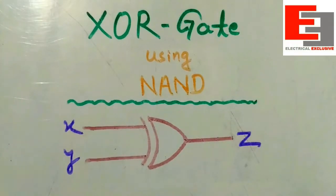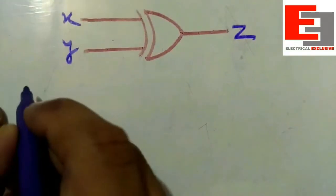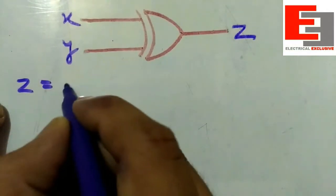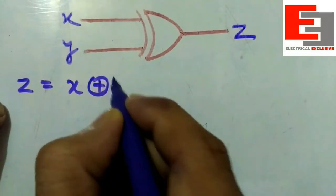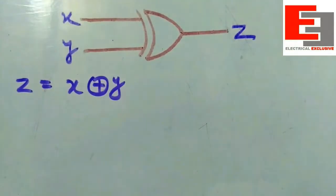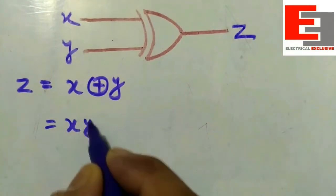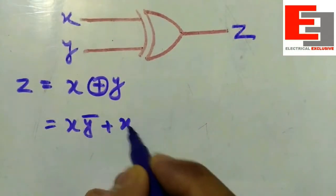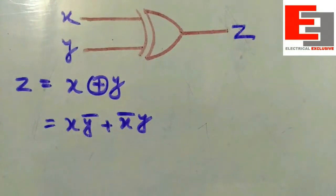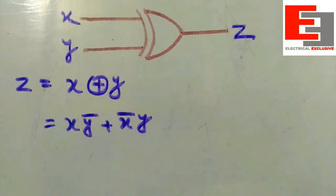Before we proceed we need to remember the output of the XOR gate. We know the output Z is equal to X XOR Y. If we re-simplify this expression it will be XY̅ plus X̅Y. In the last class we implemented the logical equivalent of the XOR gate based on this expression.